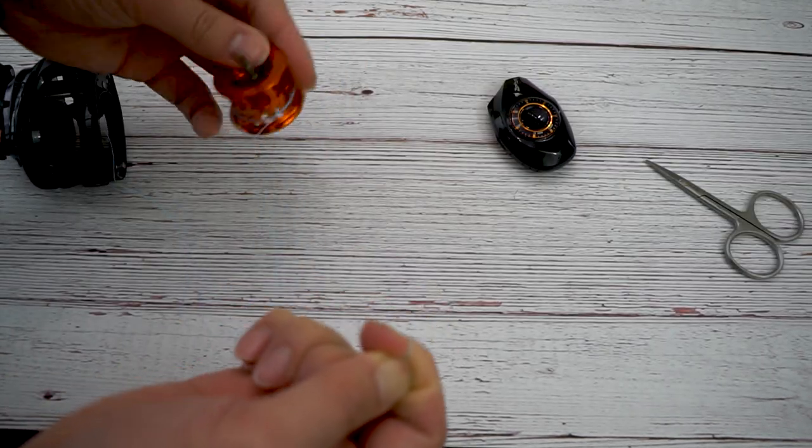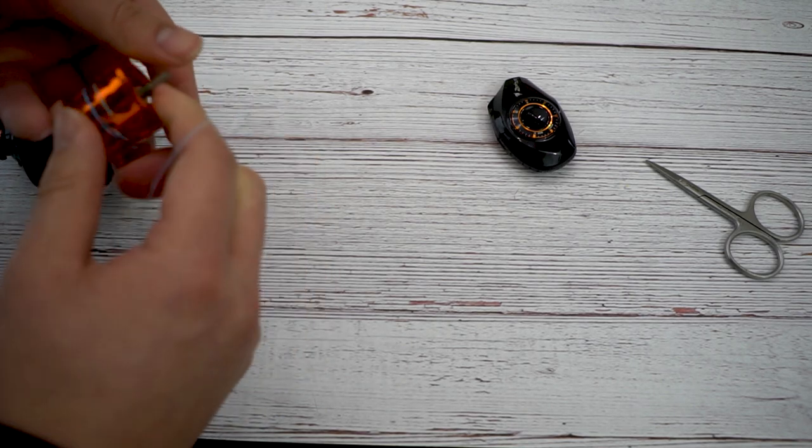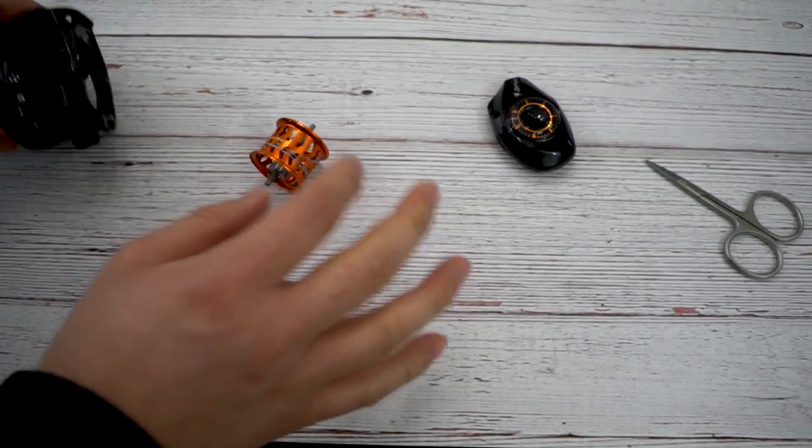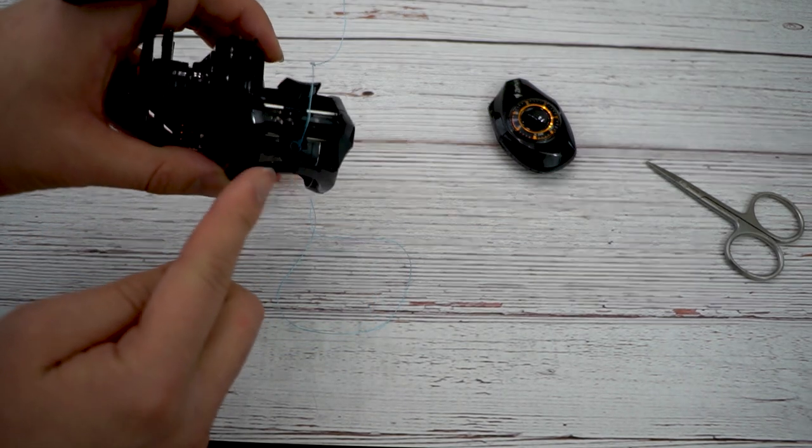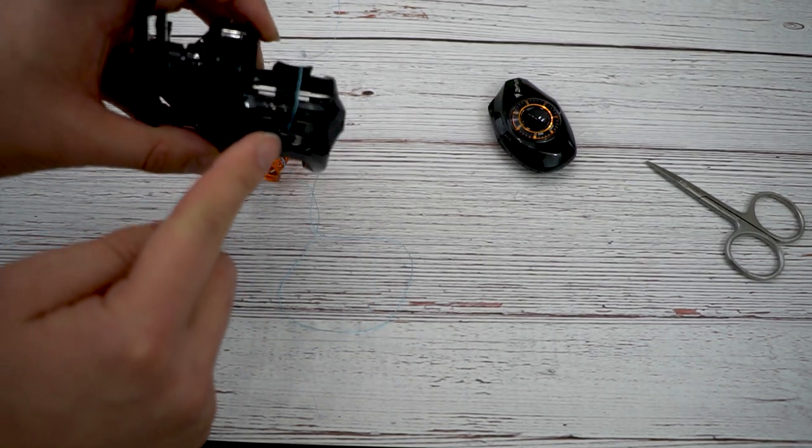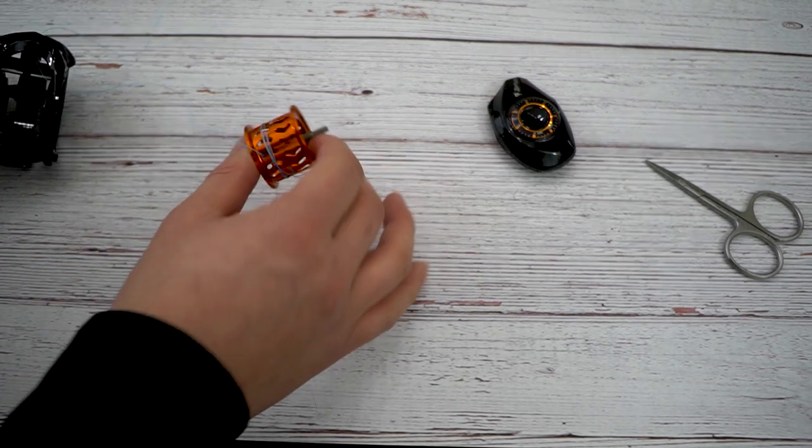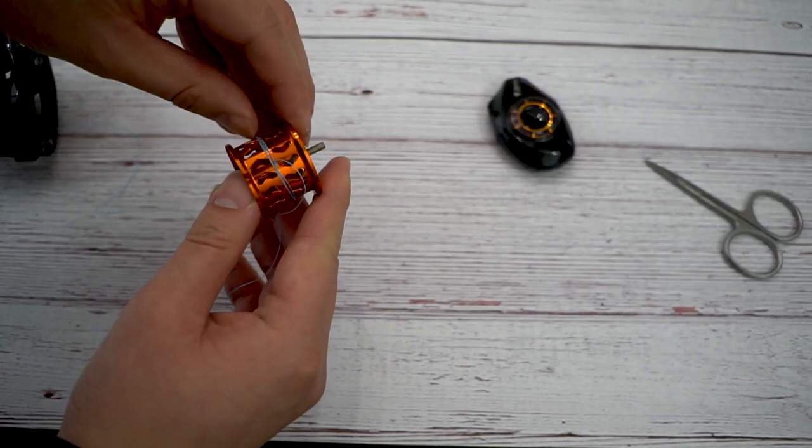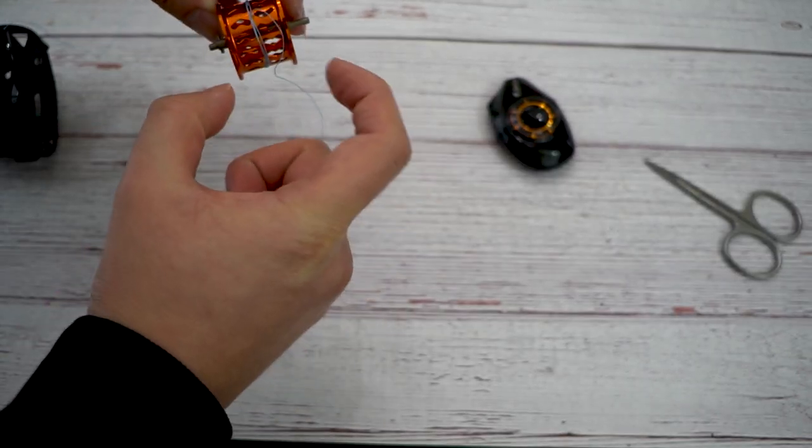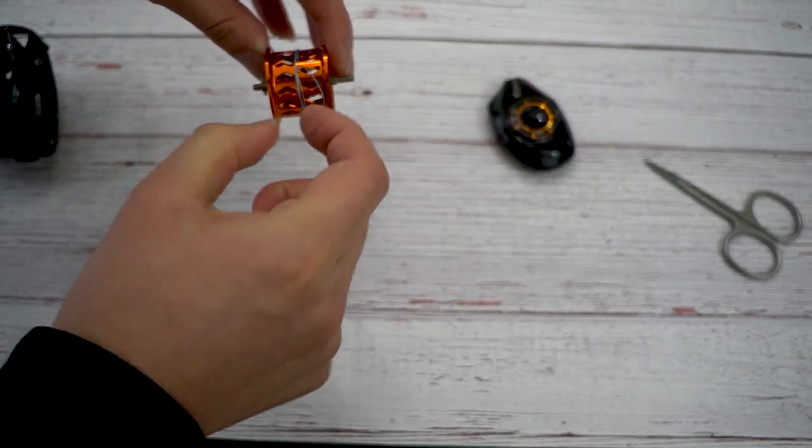Then you cinch it down. And what I like to always do too is make sure my guide right here for my reel, it's where my line is going to line up. So since I have it in the center, what I want to do is push this to the center.